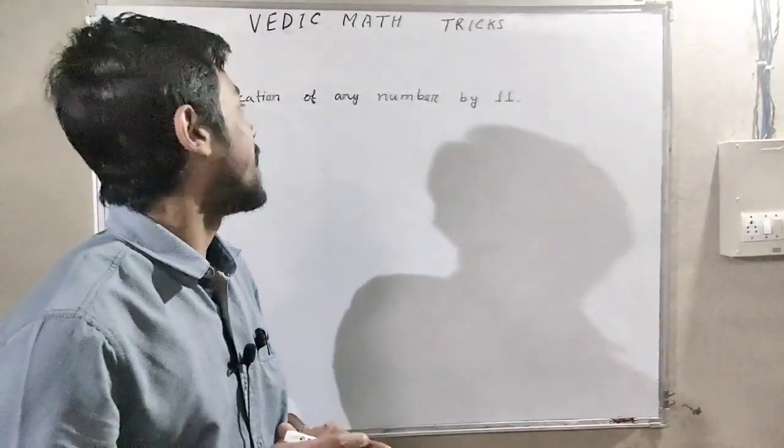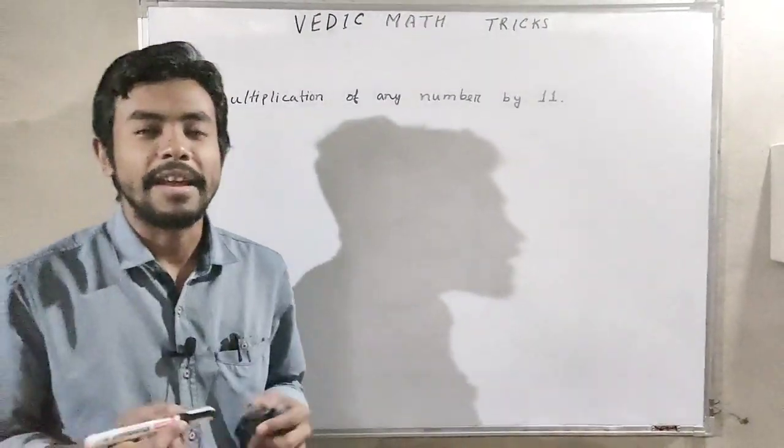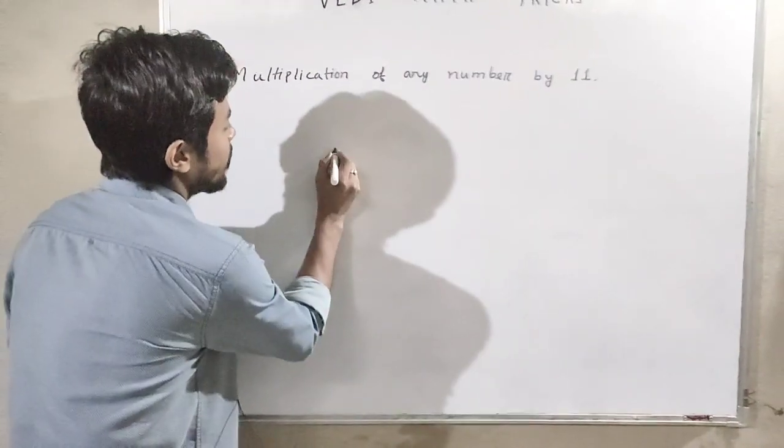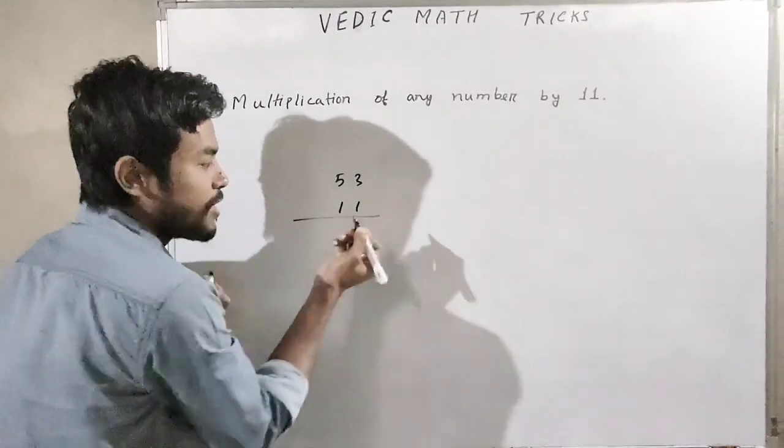Here is trick number one: multiplication of any number by 11. Multiplication of any number by 11 is very easier and simple. Suppose we have to multiply 53 by 11.